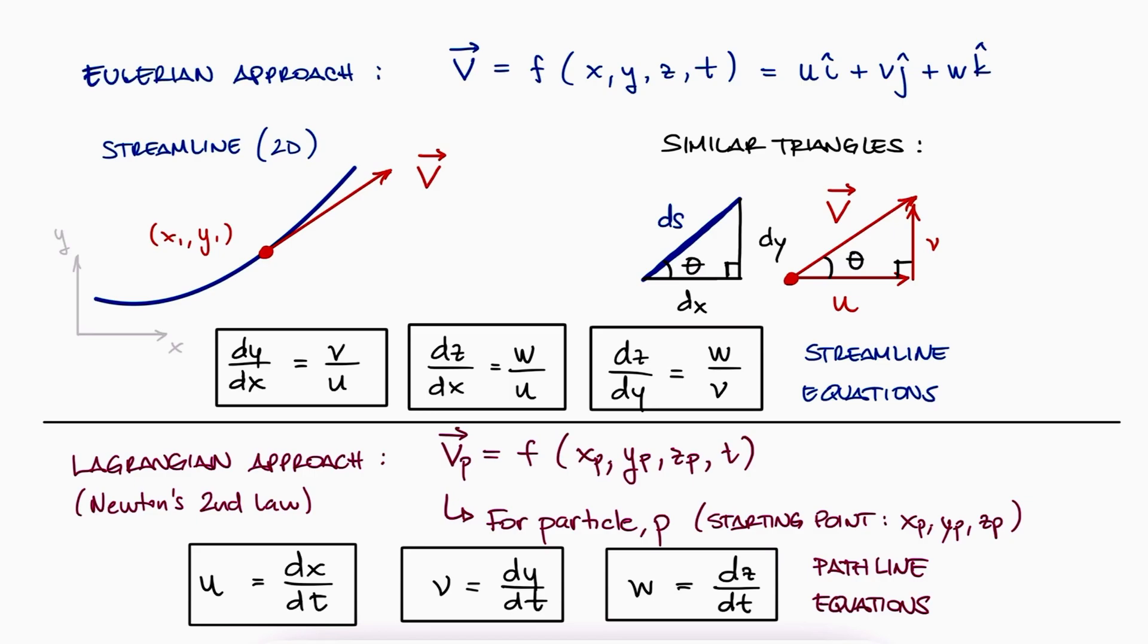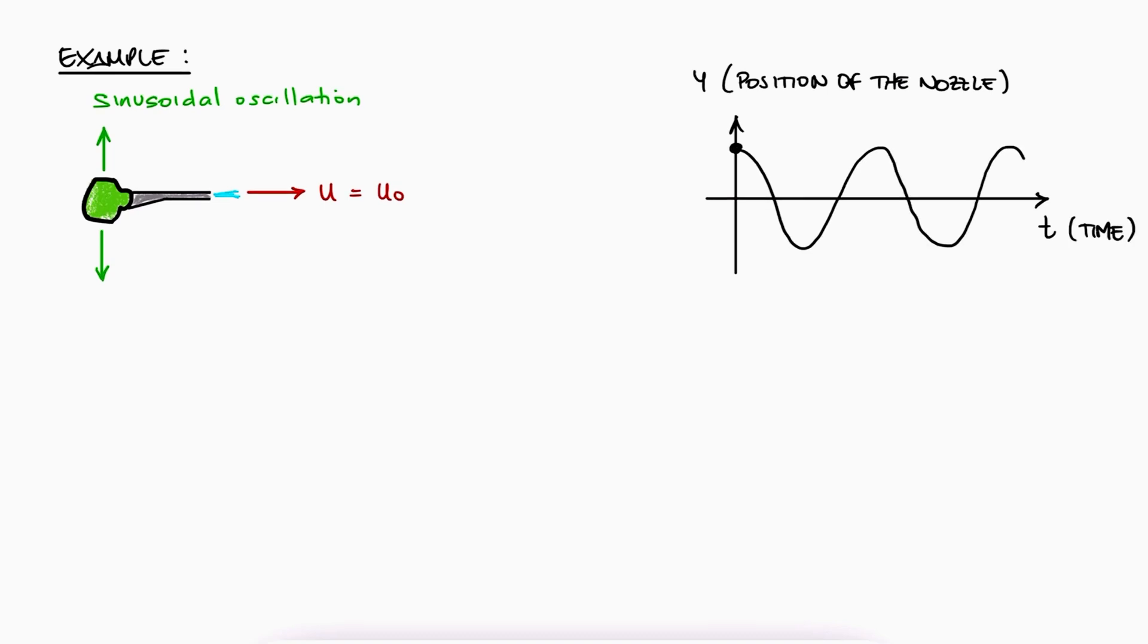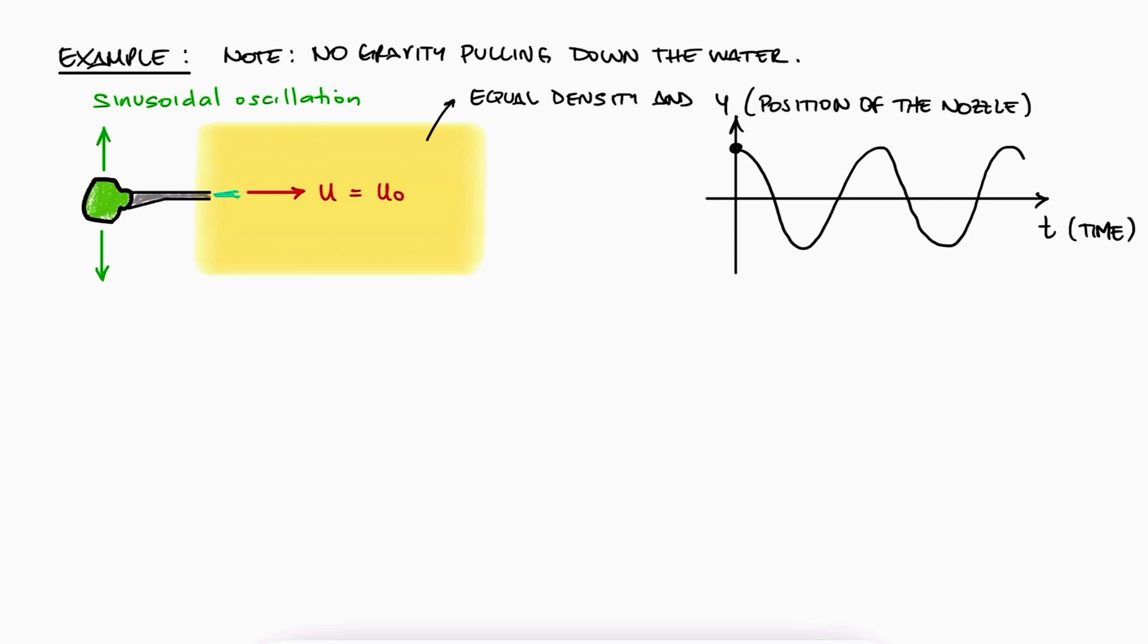Let's look at a simple example where we use these definitions. If you want to check out more complex examples or the other 10 minute lecture videos of the Fluids Mechanics course, make sure to check out the links in the description below. Let's say we have a nozzle dispensing water at a constant velocity u0. And let's imagine that the nozzle itself is moving from top to bottom following a sinusoidal movement over time. Let's say it starts at the top and it starts moving down at time t equal to 0. And for simplification purposes, let's assume that there is no gravity pulling down the water coming out of the nozzle. An alternative to this assumption is that the water is being dispensed inside another fluid of equal density that would not dilute in water nor vice versa.